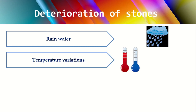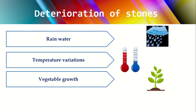Next is temperature variation. A rise in temperature results in expansion of the stones, and a fall in temperature results in contraction. If this rise and fall of temperature is very frequent, your stone will obviously be more vulnerable to decaying.